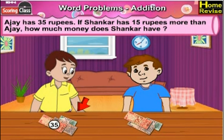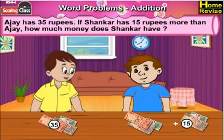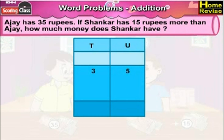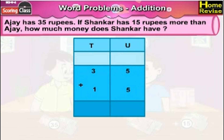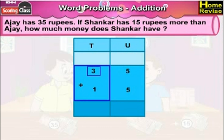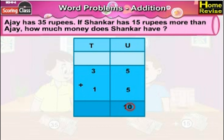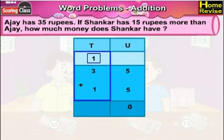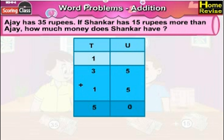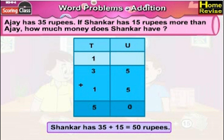Ajay has 35 rupees. If Shankar has 15 rupees more than Ajay, how much money does Shankar have? Shankar has 35 rupees plus 15 rupees. Under units column we have 5 units plus 5 units, and under tens column we have 3 tens plus 1 ten. 5 units plus 5 units is 10 units — write 0 in the units column and carry forward 1 in the tens column. In the tens column it is 1 ten plus 3 tens plus 1 ten, that is 5 tens. So it is 5 tens plus 0 units, which means Shankar has 35 rupees plus 15 rupees, that is 50 rupees.